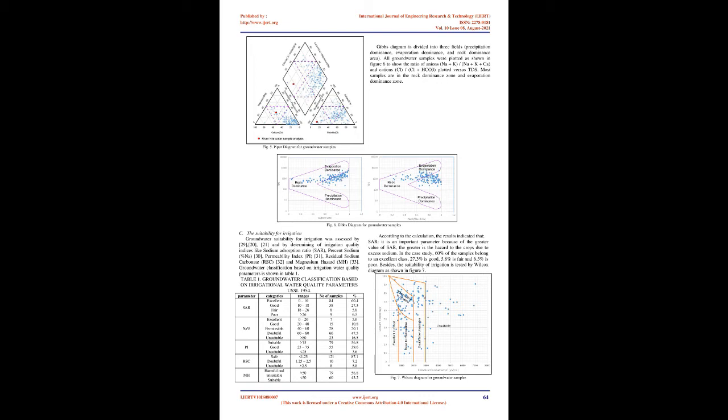Kriging calculations depend on the variogram. The variogram models were used to build the groundwater quality contour maps and to calculate the standard deviation of interpolation errors of the existing wells. In this work, Microsoft Excel and Surfer (Golden Software LLC) were used for calculations, data classification, statistical analysis, and generating the contour maps.